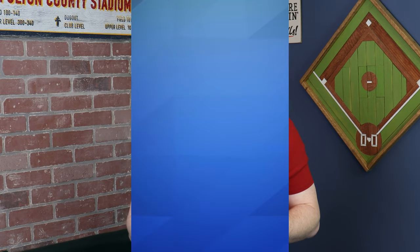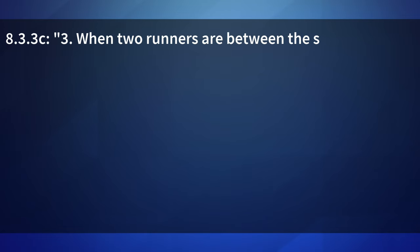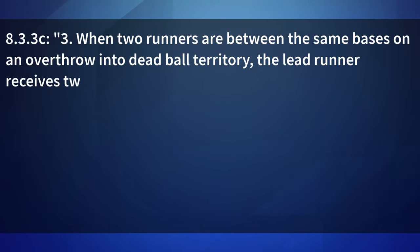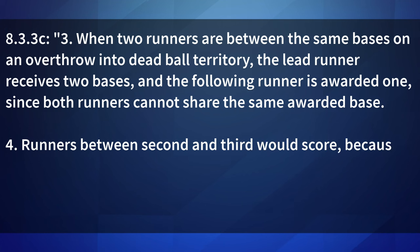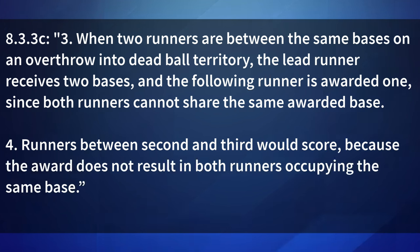This is why it's so important to know on a pick-off if the pitcher legally disengaged the rubber before throwing. The rule continues with some clarification on awarding those bases in points 3 and 4. When two runners are between the same bases on an overthrow into dead ball territory, the lead runner receives two bases and the following runner is awarded one, since both runners cannot share the same awarded base. Runners between second and third would score because the award does not result in both runners occupying the same base.